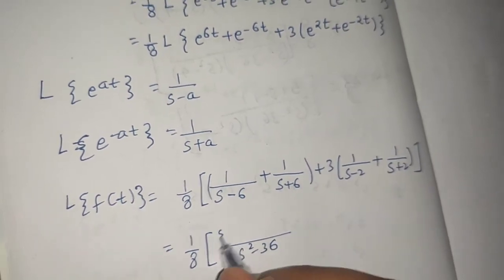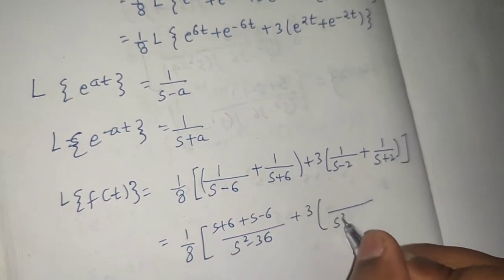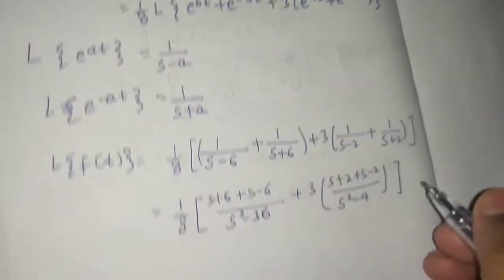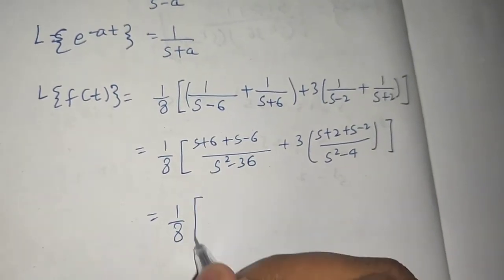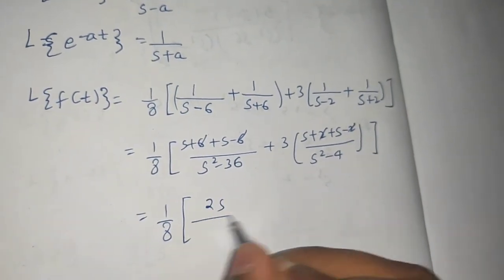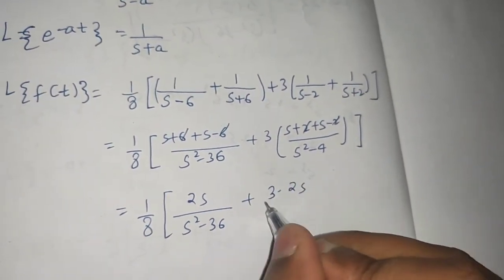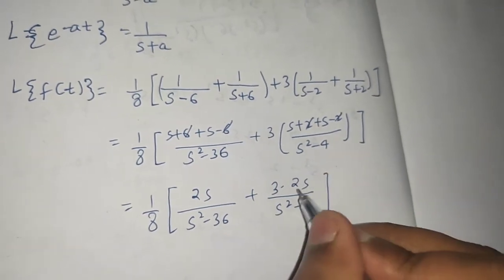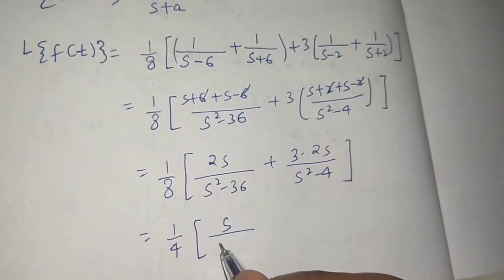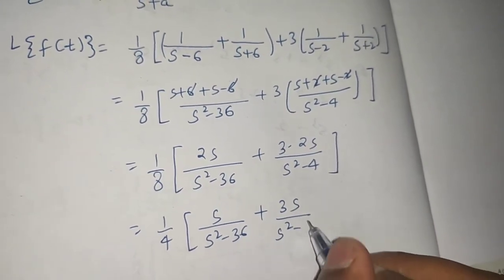Simplifying with 1 by 8 outside and taking LCM: for the first pair we get s plus 6 plus s minus 6 over s squared minus 36, which gives 2s over s squared minus 36. For the second pair, 3 times 2s over s squared minus 4. Taking 2 out, 2 by 8 gives 1 by 4, leaving s over s squared minus 36 plus 3s over s squared minus 4.